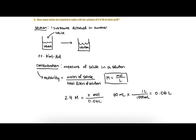After we get to this point, we can do a quick cross multiplication: 2.4 times 0.06 equals x. Multiplying and solving, we find that x equals 0.144. So we will need 0.144 moles of solute to make a 60 milliliter solution of 2.4 molar nitric acid.